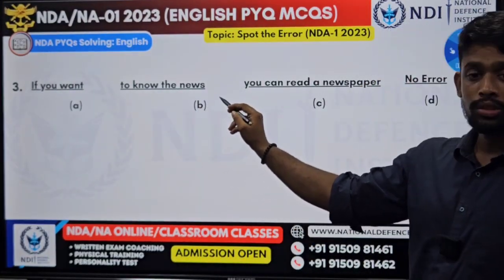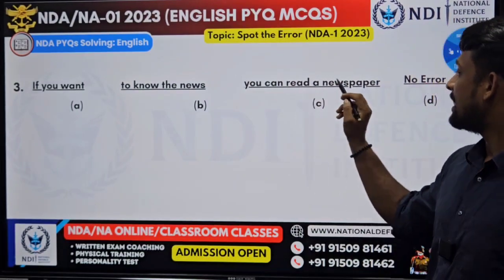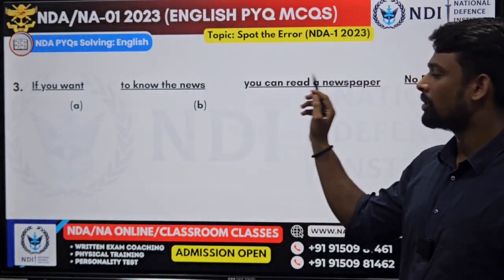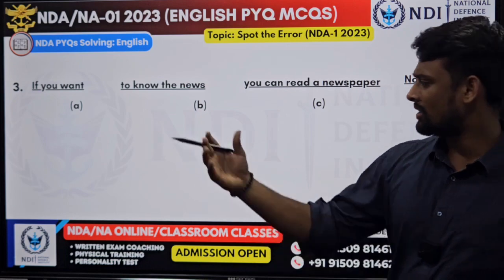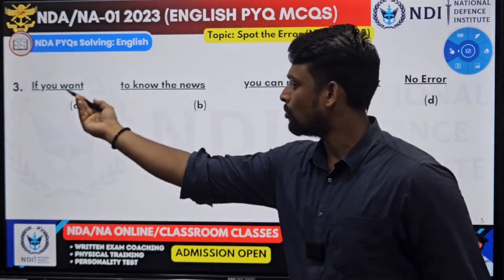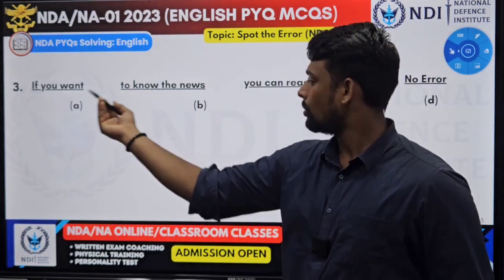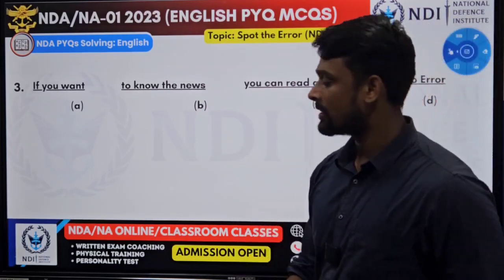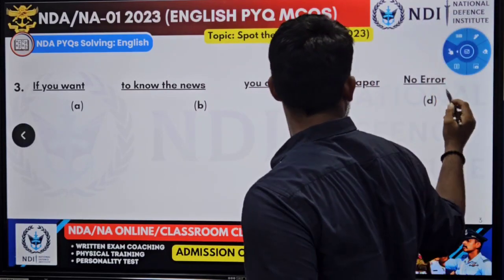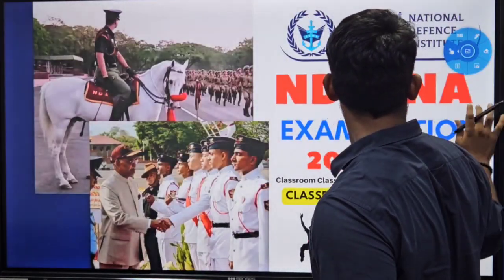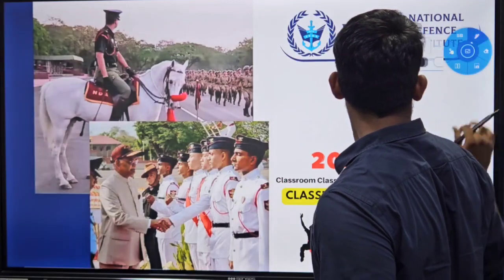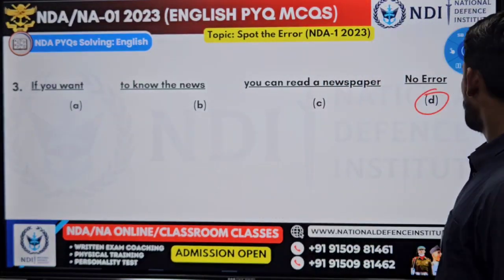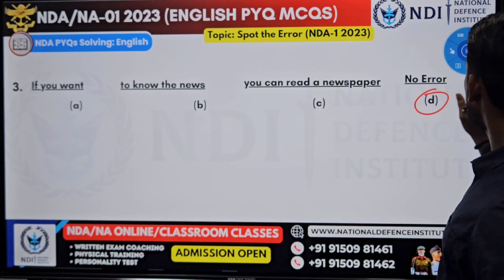Question three: 'If you want to know the news, you can read a newspaper.' Analyzing this sentence — 'if you want', 'to know the news', 'you can read a newspaper' — I don't think there is any error. So we can easily select this as no error. This question has no error in it.